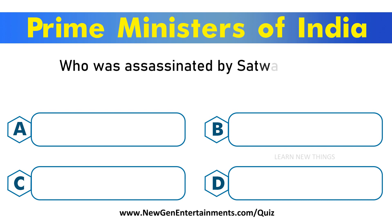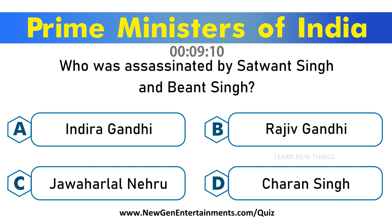Who was assassinated by Satwant Singh and Beant Singh? Options are A. Indira Gandhi, B. Rajiv Gandhi, C. Jawaharlal Nehru, D. Charan Singh. Answer is Option A. Indira Gandhi.